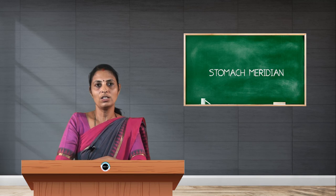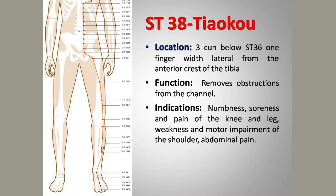Stomach 38, Tiaokou, is located 3 cun below Stomach 36, 1 finger-breadth lateral to the tibial tuberosity. It is a specific point for frozen shoulder.